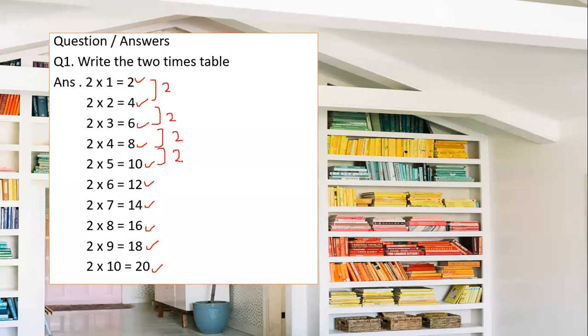If you see all of the answers, these are two, four, six, eight, ten, twelve, fourteen, sixteen, eighteen, twenty. All of these numbers are even numbers — they are not odd numbers.